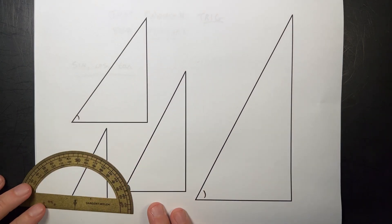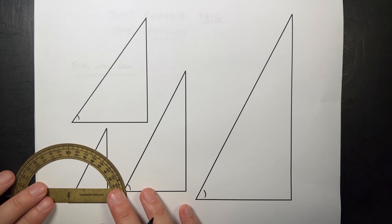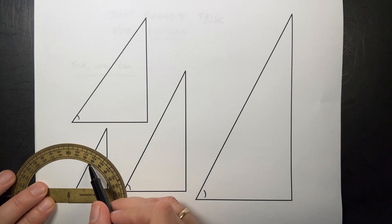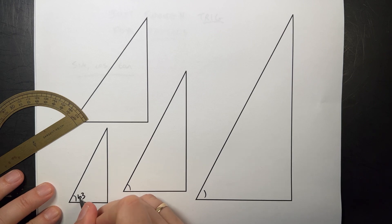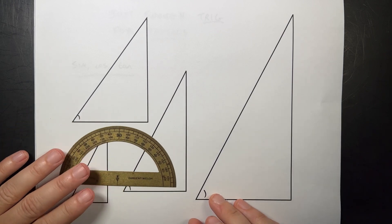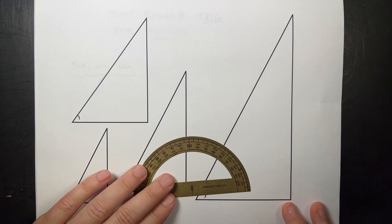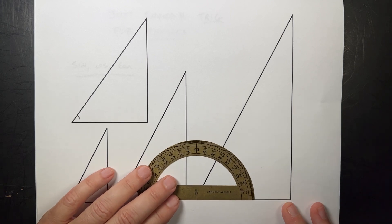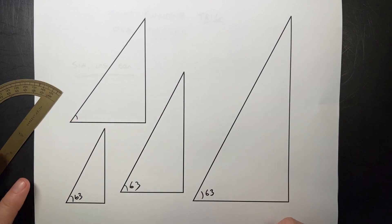Right here I have an actual protractor. I'm going to put that right there, so I might not be perfect but it's okay. This goes from zero, it looks like it's about 63 degrees. Now this one is 63 degrees. This one is, I made these the same, 63. Those are all 63.